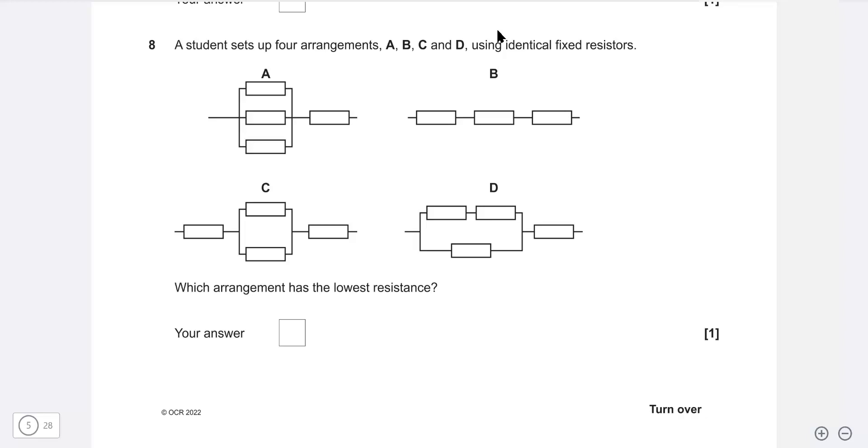Let's solve some electricity GCSE physics questions. These questions are suitable for all exam boards. The first one: a student sets up four arrangements using identical fixed resistors. Which of them has the lowest resistance?